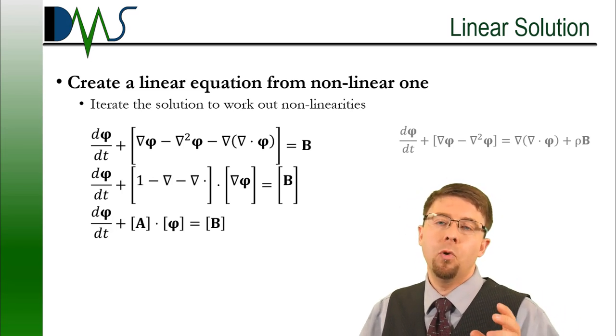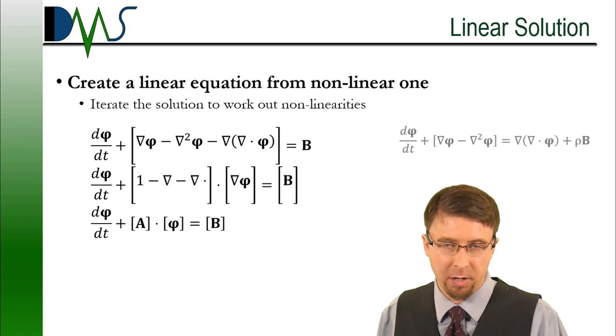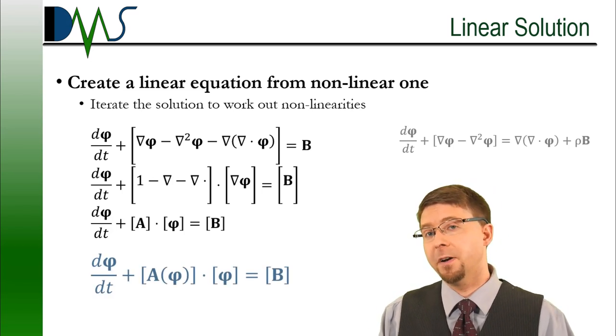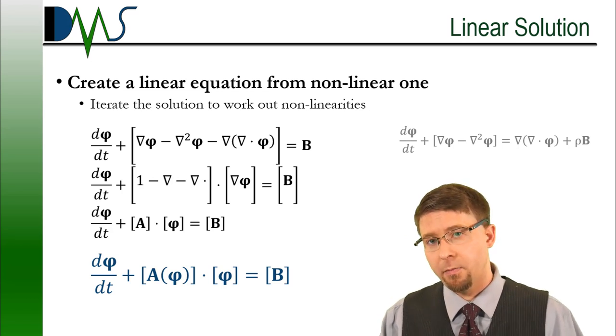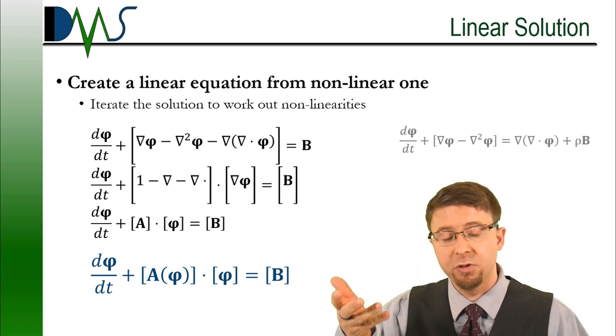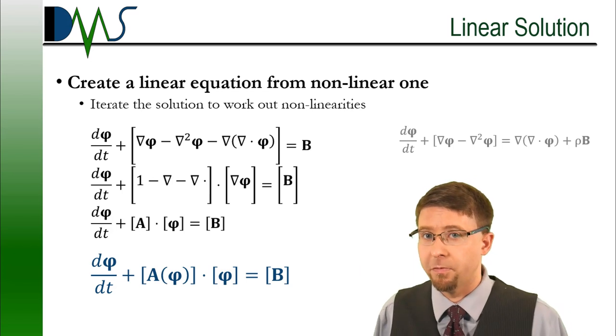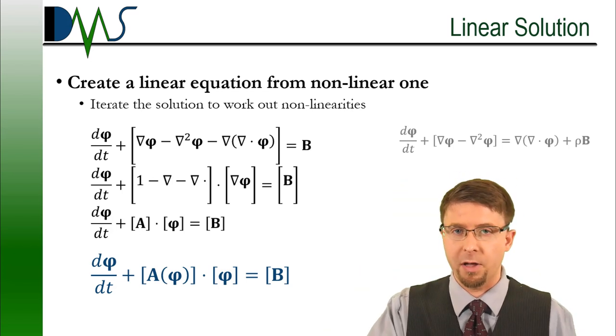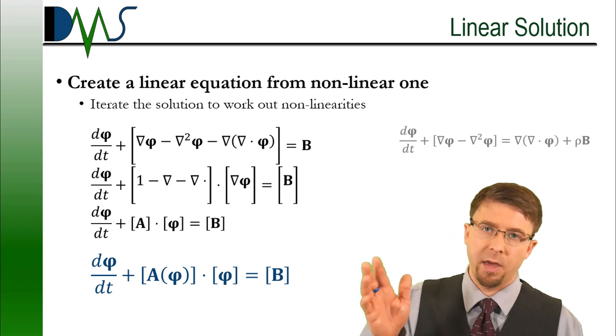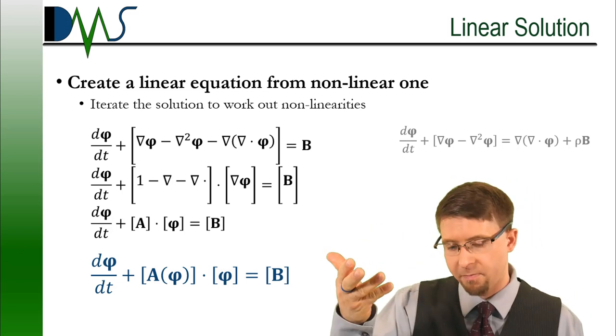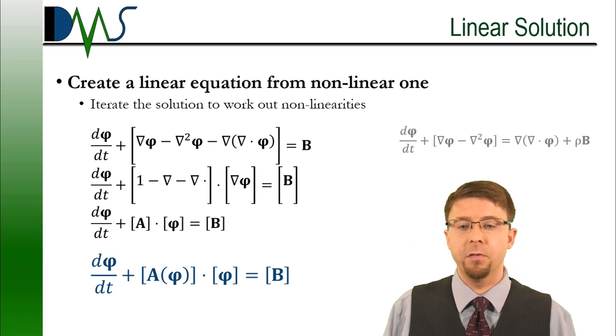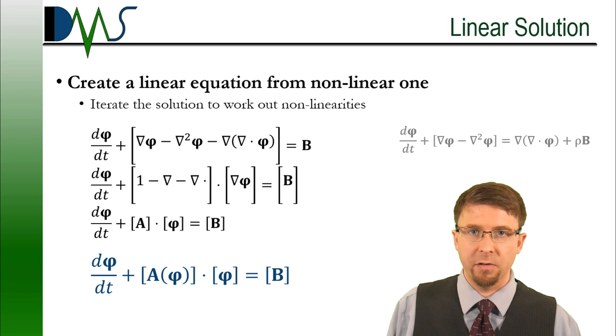∇φ is the gradient of phi. And what we do is we pull that out and we treat that as its own matrix. So 1 minus ∇ minus ∇·, that becomes the A matrix. And suddenly we have a potential linear solution here. So we have the A matrix, which is a function of the solution. And then we actually have phi, which is our solution variable. That's the thing we're actually solving for. B, that's our source terms. Okay, those are all of our constants. And then we have dφ/dt. That's our time variation term. And now we actually do have something that we can solve for with a linear equation solver.